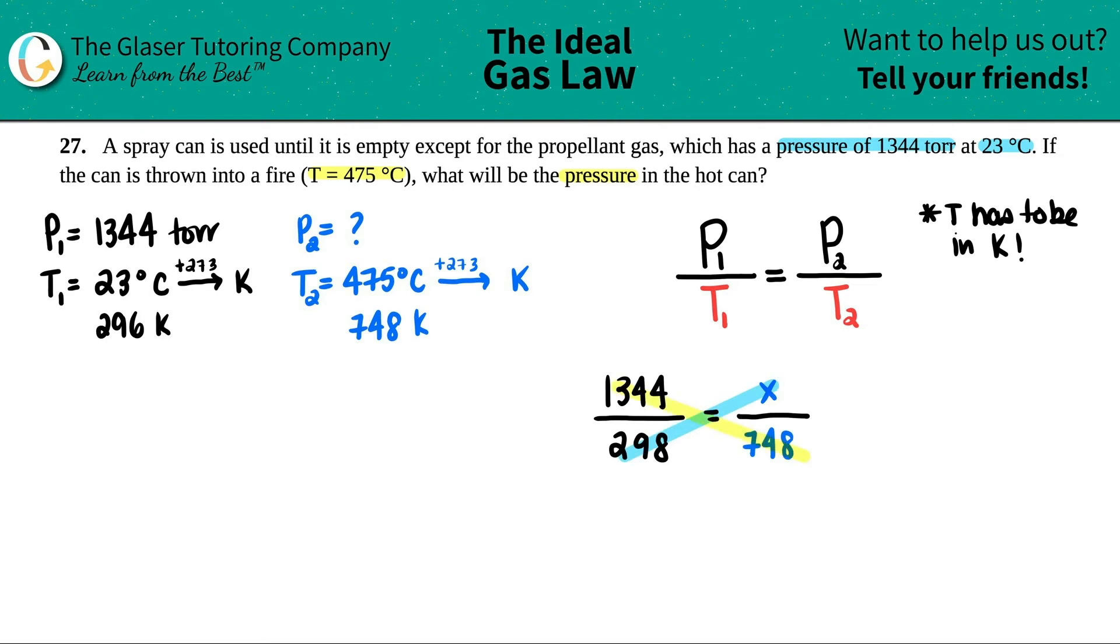Looks like we're doing cross multiplication here. I like that. So basically 298 times X equals whatever these two multiplied together, 1,344 times 748. I get roughly a big number. I'm not going to round because that's not my final answer. And then we just want to divide by 298. And then we get our answer.